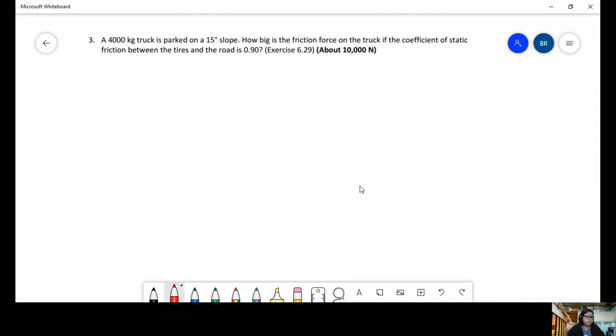I'm Blanca Arangel, I'm going to be helping you solve problem 6.29 of Knight. So let's start. You had a 4,000 kilogram truck parked on a 15-degree slope. It's asking us how big is the friction force on the truck if the coefficient of static friction between the tires and the road is 0.90. And it gives the answers here, just to make sure.